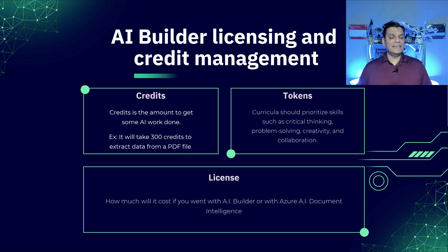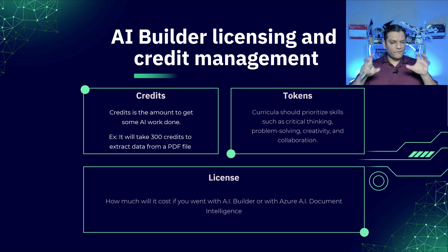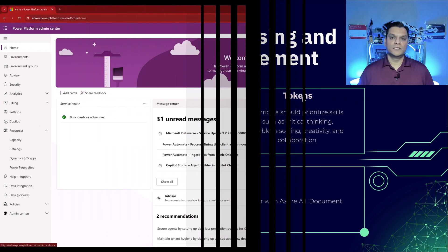Finally there's the license, because depending on which type of license you purchase you get a certain amount of credits. A guaranteed way to know exactly how many credits you have in your tenant is to be a Power Platform Administrator and go to the Power Platform Admin Center, also known as PPAC. In there, go to Resources and then Capacity.